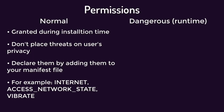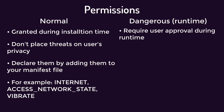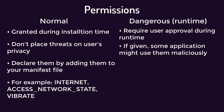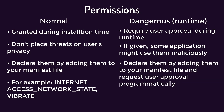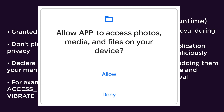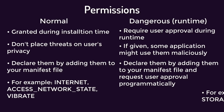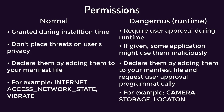On the other hand, dangerous permissions — or runtime permissions — require the user's explicit approval at runtime, when the application is running, due to their potential impact on privacy or device operations. You still have to declare them in your manifest file, but then you also have to programmatically ask for the user's approval by prompting the user to allow or deny the permission via a dialog. Camera, storage, and location are examples of dangerous permissions.